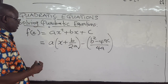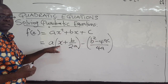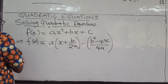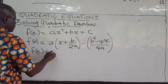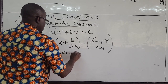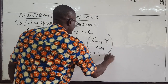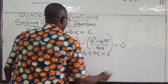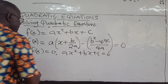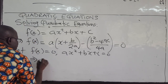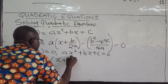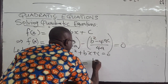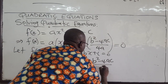To solve the quadratic equation, we equate f(x) to 0 and solve for x. So if f(x) = 0, that is ax² + bx + c = 0, we equate our completed-square expression to 0. We then divide through by a, giving us (x + b/2a)² = (b² minus 4ac) all over 4a².